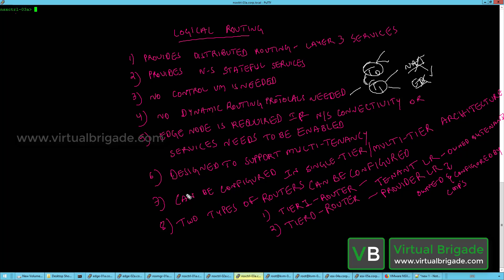The logical routers in NSX-Edge provide multi-tenancy support. If you are a cloud service provider with multiple tenants to manage, for each tenant you can deploy Tier1 logical routers to provide network connectivity to the virtual machine workloads. The logical routers can be configured in a single-tier architecture and also support multi-tier architecture.